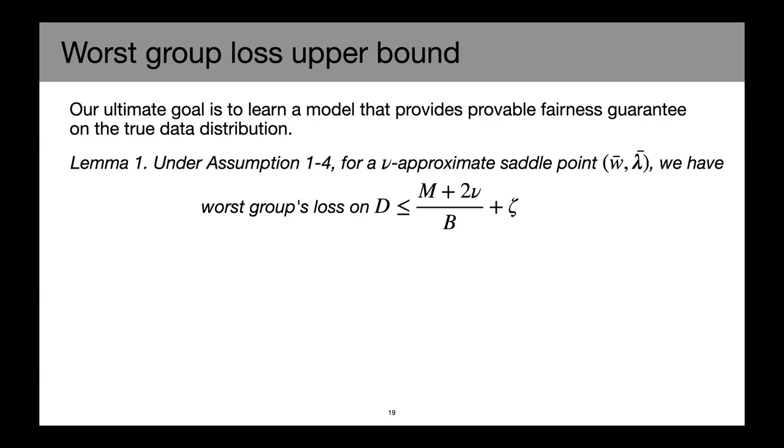So it is worth noting that from this bound, we are not seeing those kind of fairness utility trade-offs where if we want to have better utility, we have to sacrifice for the fairness. In fact, if we train long enough where we're getting better utility, nu is small, which also means we have better control on the worst group's loss.